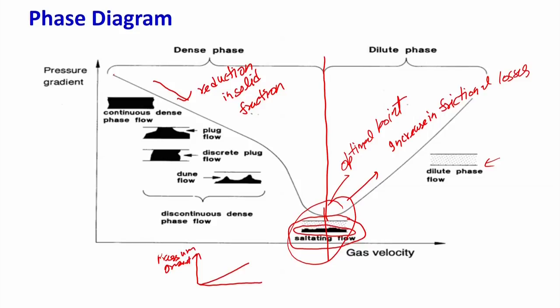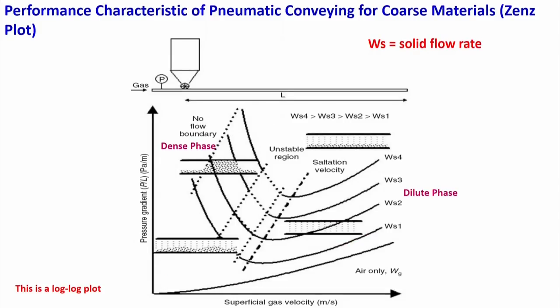One can also see where the maximum mass of solids can be transported — the mass loading rate or transfer capacity. Where both the minimum pressure drop point and maximum transfer point coincide, that should be the operating regime. As per this phase diagram of delta P versus velocity, at the saltation regime the delta P is minimum. As per the pressure drop point, the optimal operating point will be the saltation regime.